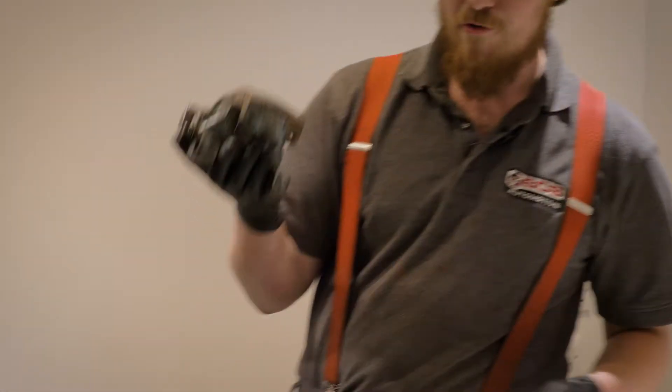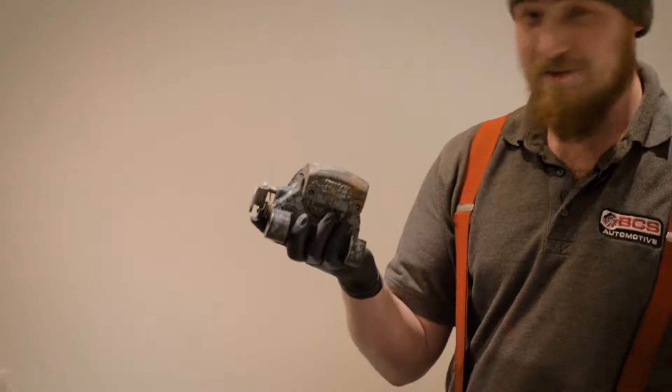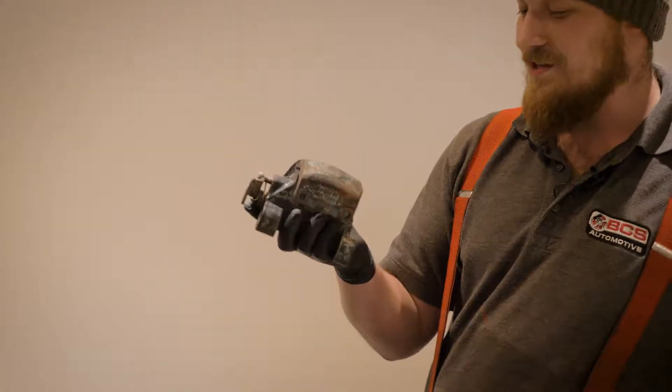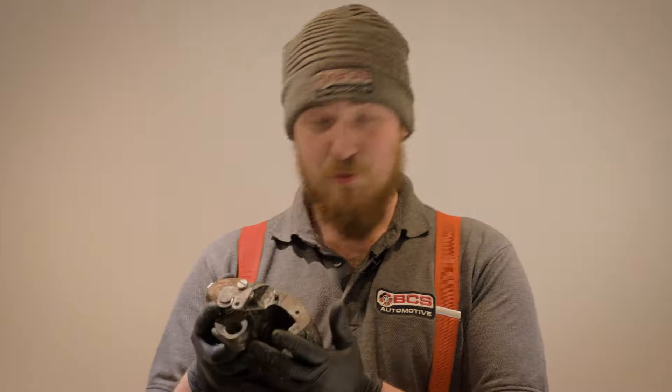Now we've got a caliper here from a Rover P6. Any of you that are familiar with it? They were made between 1963 and 1977 and this is pretty much as complicated as brake calipers get.